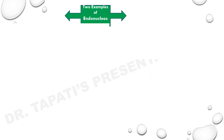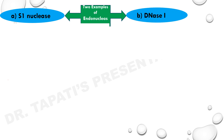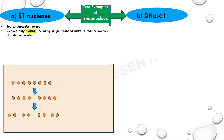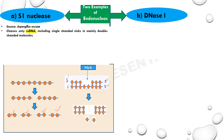Now for two examples of endonucleases: the first is S1-nuclease, the second is DNase I. S1-nuclease is obtained from Aspergillus oryzae. It cleaves only single-stranded DNA, including single-stranded nicks in mainly double-stranded molecules. If you see this figure, acting on single-stranded DNA, these are the final fragments obtained. In the next figure, there is a nick in double-stranded DNA, and S1-nuclease acts on the single-stranded region at that nick.